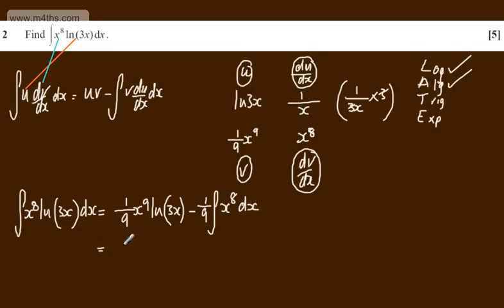So we're going to have now 1/9th x to the 9th multiplied by the natural log of 3x. I now need to integrate this, so I'm going to raise by a power and divide by the new power. So it's going to be 1 over 81 x to the power of 9, and then we're going to have a constant of integration.